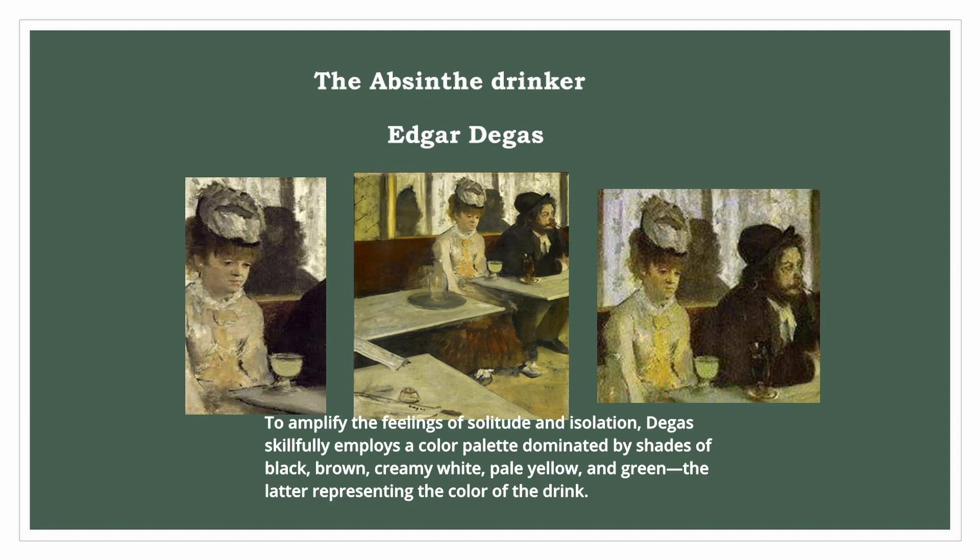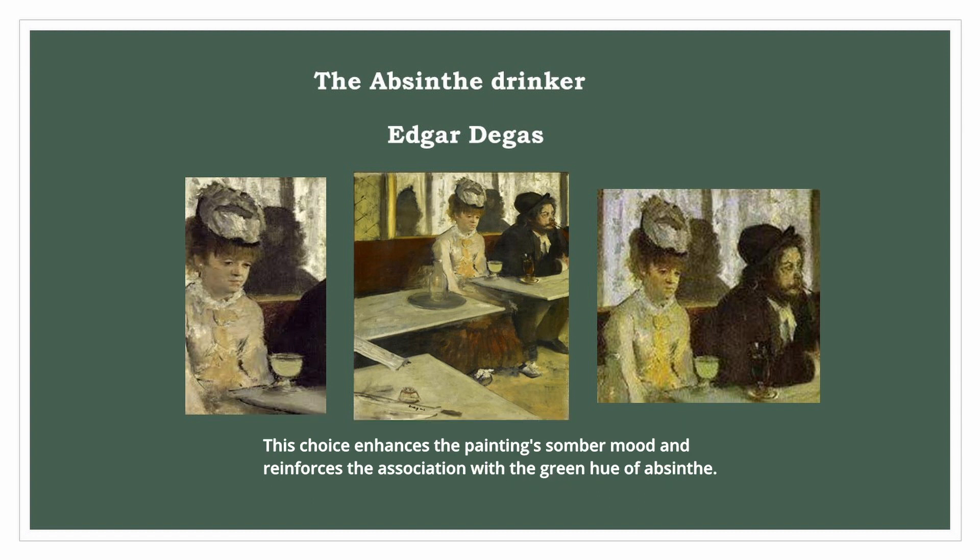To amplify the feelings of solitude and isolation, Degas skillfully employs a color palette dominated by shades of black, brown, creamy white, pale yellow, and green — the latter representing the color of the drink. This choice enhances the painting's sombre mood and reinforces the association with the green hue of absinthe.